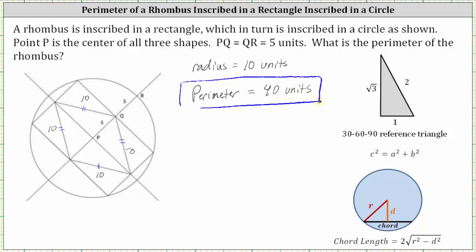Now, I did find other ways to find this perimeter using the chord length formula, as well as the Pythagorean theorem, or even the 30-60-90 reference triangle. But I think the method I just covered is probably the quickest. I hope you found this helpful.